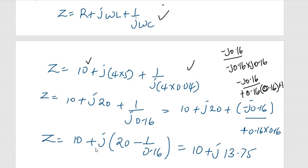So Z will equal 10 plus j times 20. If I simplify it, I will have something like 1 over 0.16. You treat the imaginary parts differently because they align with each other.